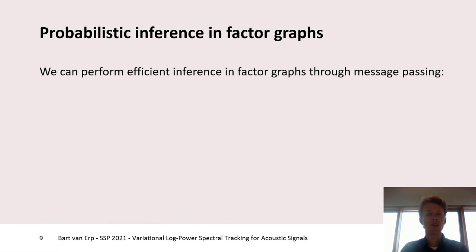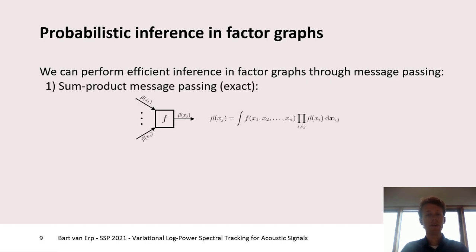Now that we have specified a probabilistic model, it's time to discuss how we can perform probabilistic inference within this model. Because of the many conditional independencies within the model, we can perform efficient inference through message passing. We can see this message passing as passing messages on the edges of a graph, each containing information about the previous part of the graph. If we were to do exact inference using the sum-product algorithm, we can calculate an outward message from a vector node to a certain edge by taking the product of that node and incoming messages, and then marginalizing out all random variables except the ones we are sending a message to.